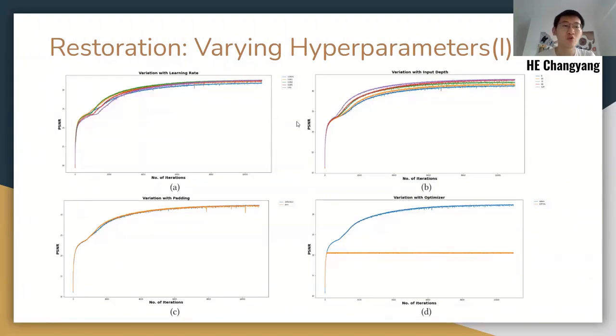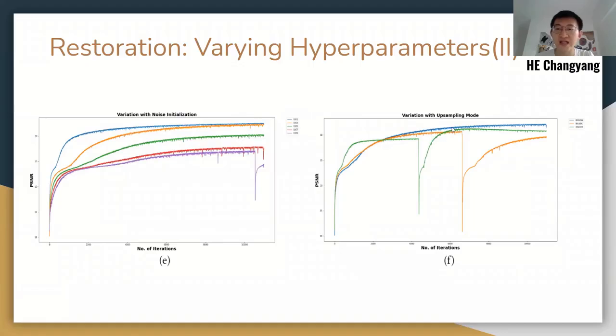For restoration, we also test the same hyperparameters. In addition to padding mode, restoration is also not sensitive to learning rate. And for noise initialization and upsampling mode, we can find that when noise is large or inappropriate upsampling mode is used, the training process is not stable with sudden drops after local optimal. It is only observed in restoration.